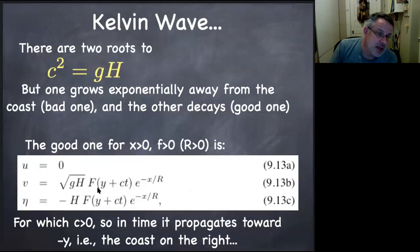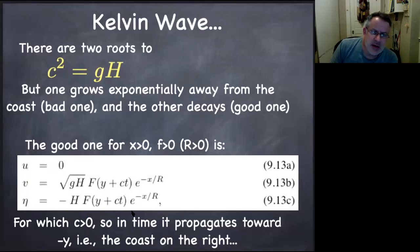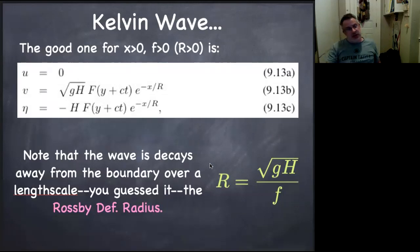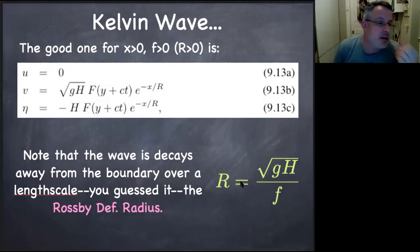The Kelvin wave propagates in the minus-y direction in this case. There is exponential decay in the x direction with a factor called R — the Rossby deformation radius. U is zero everywhere, but V is definitely not, and neither is eta. There's this funny exponential decay in the x direction and non-dispersive propagation in the y direction. This kind of wave propagates toward negative y — that is, with the coast on the right in the Northern Hemisphere. In the Southern Hemisphere, you get the coast on the left. The Rossby deformation radius is the square root of gh over f.